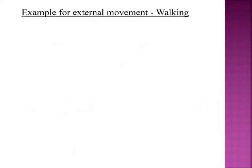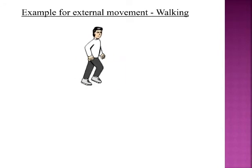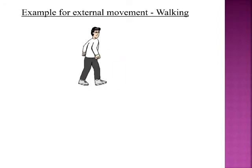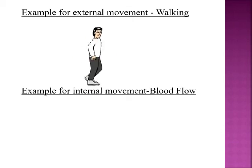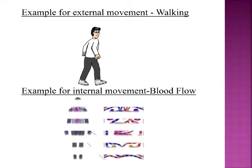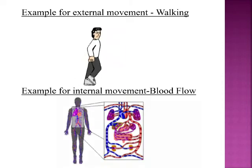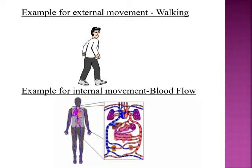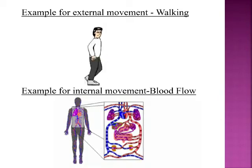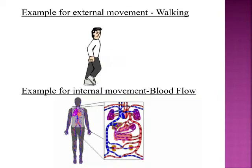Now we shall understand external movement and internal movement with examples. The first example of external movement is walking — a person moving here and there, which shows external movement. The next example of internal movement is blood flow. Our heart pumps blood to all parts of our body, which is inside the body, so it is called internal movement.